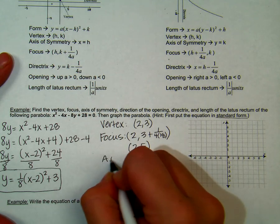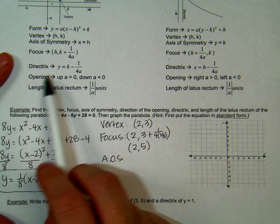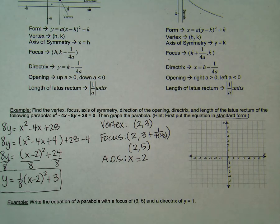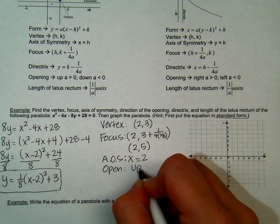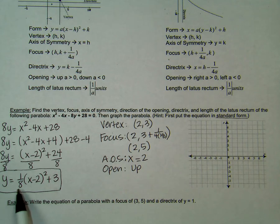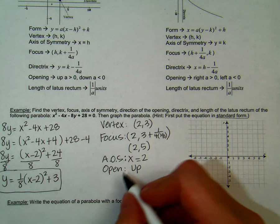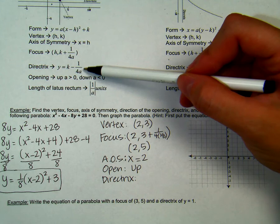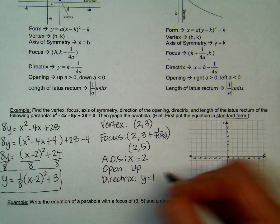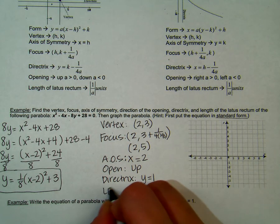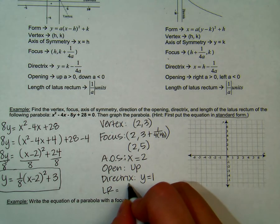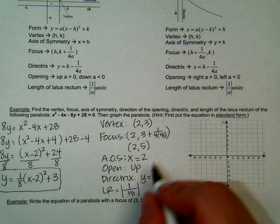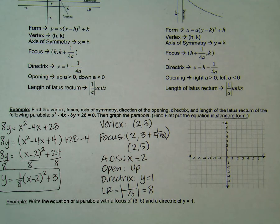Our axis of symmetry is just x equals h, so we have x equals 2. Make sure you put the x there and not just 2. The direction of opening is going to be up because our a value is positive one-eighth — since it is a positive value, our direction of opening is up. Our directrix: we plug it into the formula y equals k minus 1 over 4a, and you will get y equals 1. The length of the latus rectum is the absolute value of 1 over one-eighth, which gives us 8 units.